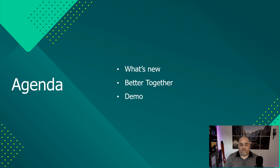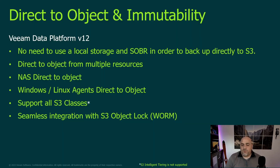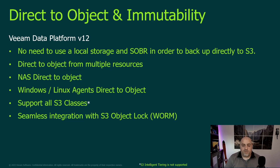Let's start with Veeam Data Platform version 12. This new release gives additional abilities with direct-to-object and immutability that are very useful with the connection to AWS S3, utilizing S3 Object Lock for backing up your data, assuring it's immutable, secure, and resilient. With this new version, customers can now backup directly into object — meaning they can directly backup into AWS S3 and use the different S3 tiers, which will be translated to be more cost-effective.